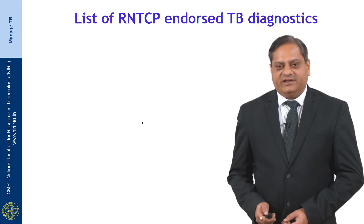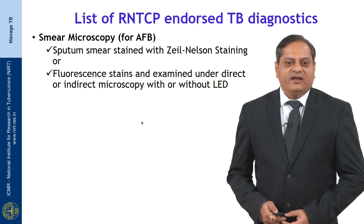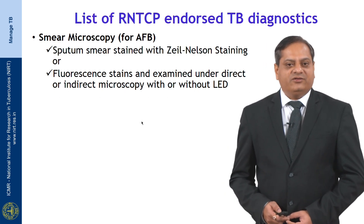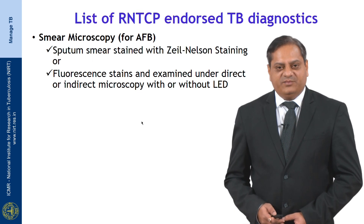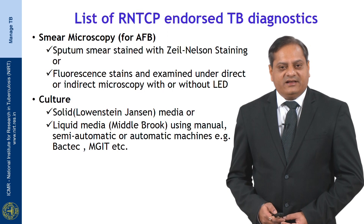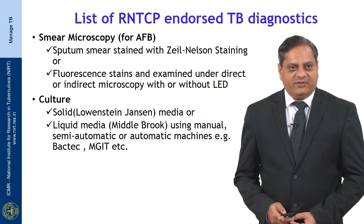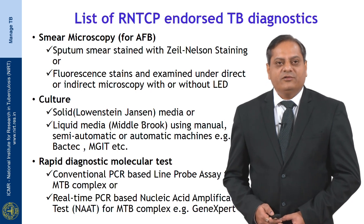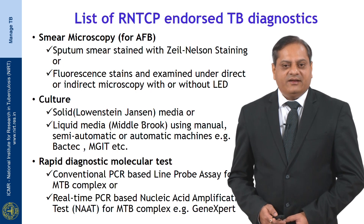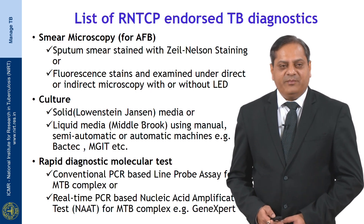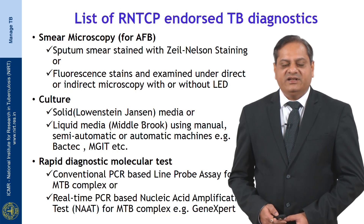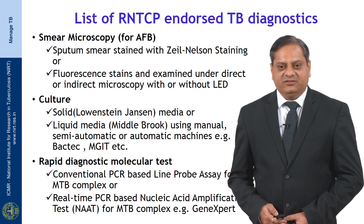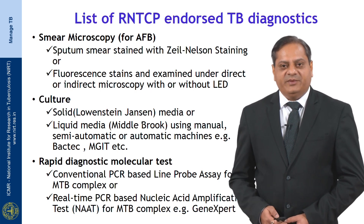The RNTCP-endorsed TB diagnostics include: smear microscopy for AFB — sputum smear stained with Ziehl-Neelsen or fluorescent stains examined under direct or indirect microscopy with or without LED; culture — either solid culture with LJ media or liquid culture, whether semi-automatic or automatic such as BACTEC; and rapid diagnostic molecular tests including real-time PCR-based line probe assay for MTB complex or nucleic acid amplification tests (NAT). One example is GeneXpert, referred to in India as CBNAAT — cartridge-based nucleic acid amplification test — and another, TrueNAT, was being validated at the time.